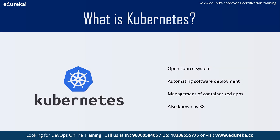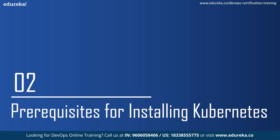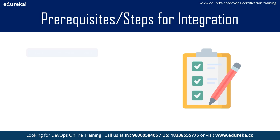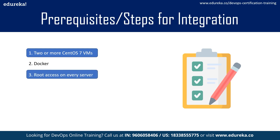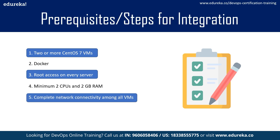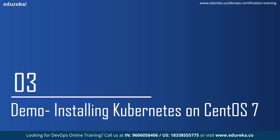Now let's look at the prerequisites for installing Kubernetes. First, you need two or more CentOS 7 servers. You also need Docker, root privileges on all CentOS servers, a minimum of two CPUs, and a minimum of 2 GB RAM with complete connectivity among all servers. You must also have swap disabled, as this is a setting in the OS that can interfere with how Kubernetes operates.